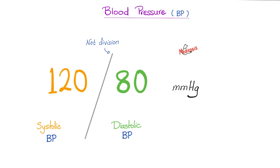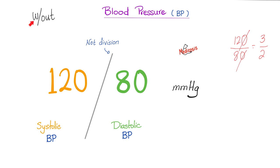When we say normal blood pressure is 120 over 80, don't try to simplify it as a fraction — this is not division. The slash signifies that systolic is written before and diastolic is written after. 120 over 80 means the systolic blood pressure is 120 and the diastolic is 80. Systolic blood pressure is the blood pressure in big arteries during systole, which means during ventricular contraction. Diastolic blood pressure is blood pressure in the big arteries when the ventricles are relaxing.